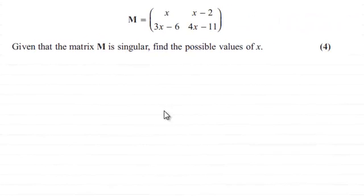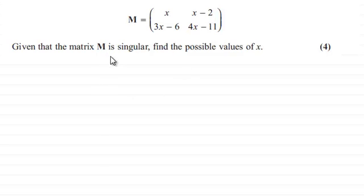Hi there. In this question we're given a matrix M with elements x, x minus 2, 3x minus 6, and 4x minus 11. We're told that the matrix M is singular and we've got to find the possible values of x for four marks. If you'd like to have a go at this, pause the video now. When you come back I'll run through the worked solution, or you can fast forward to the answer.